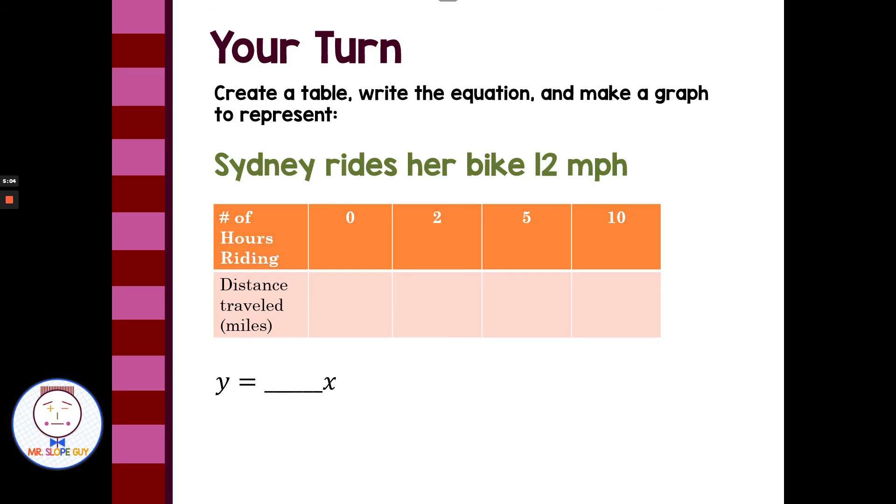You guys can pause the video here. Use Sydney rides her bike 12 miles per hour. Create a table, equation, and a graph to go with that proportional relationship. All right, welcome back. Let's check and see how you did.